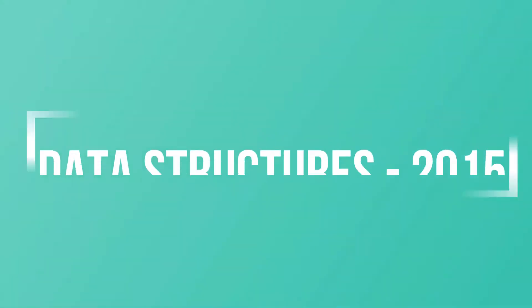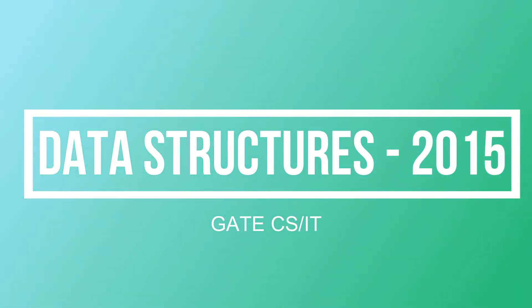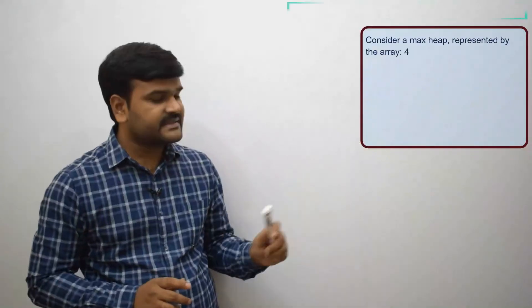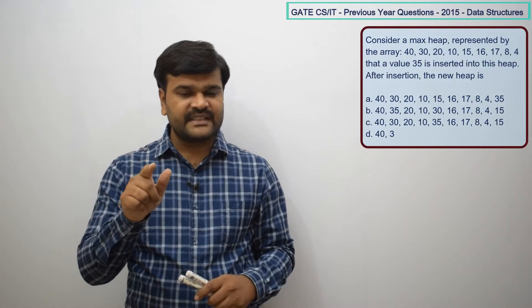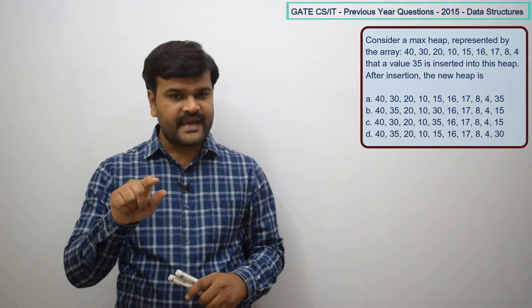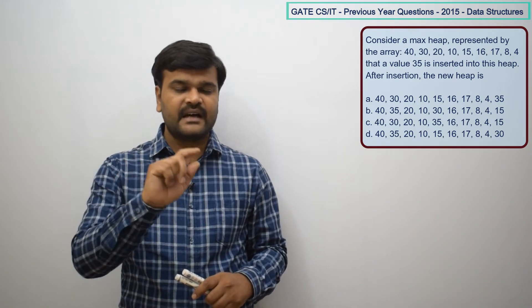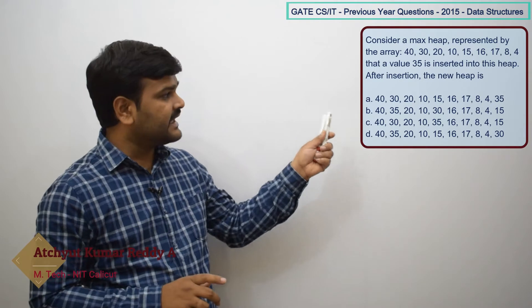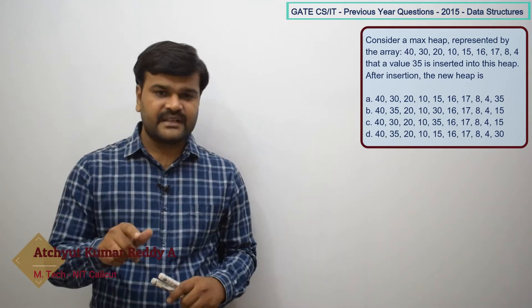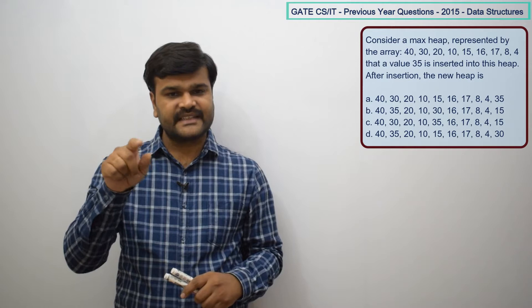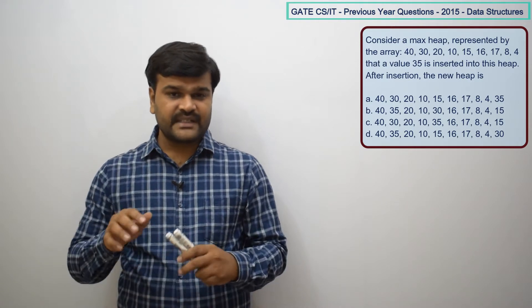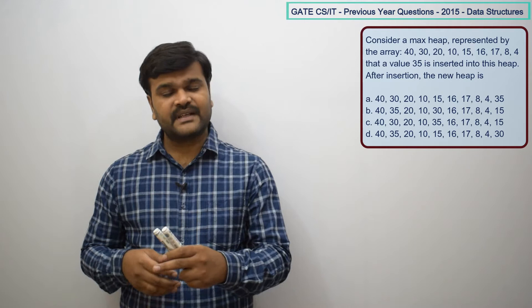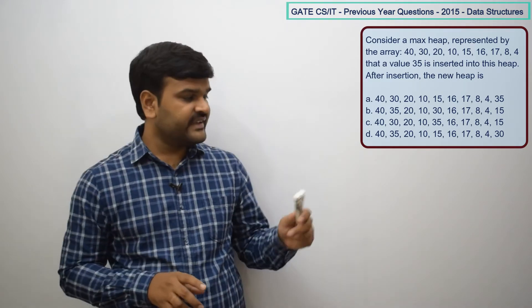This question is from the 2015 GATE CSIT exam on data structures, specifically from the heaps concept. In the question, a max heap is stored in array representation, and the array is given. We need to insert 35 into this max heap, and after adjustment, identify the correct resulting array representation from the options.